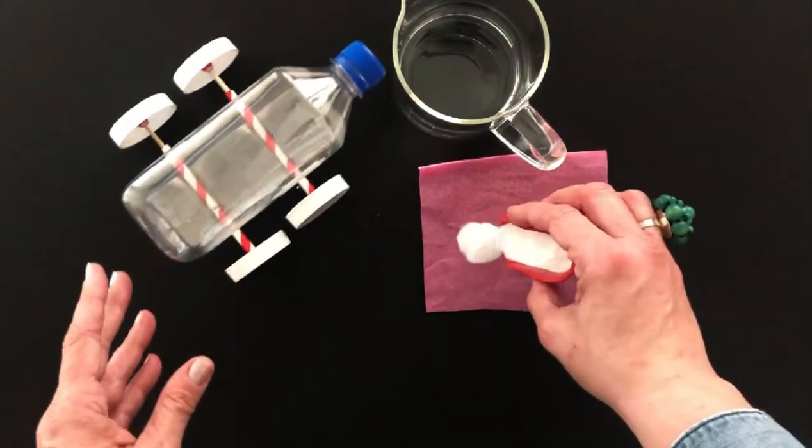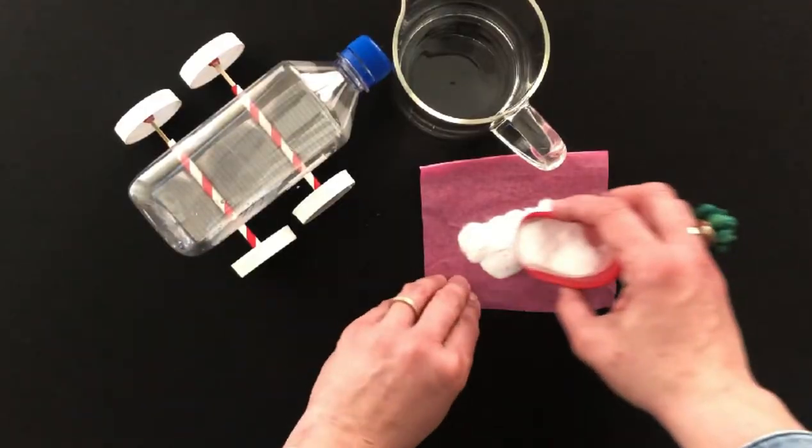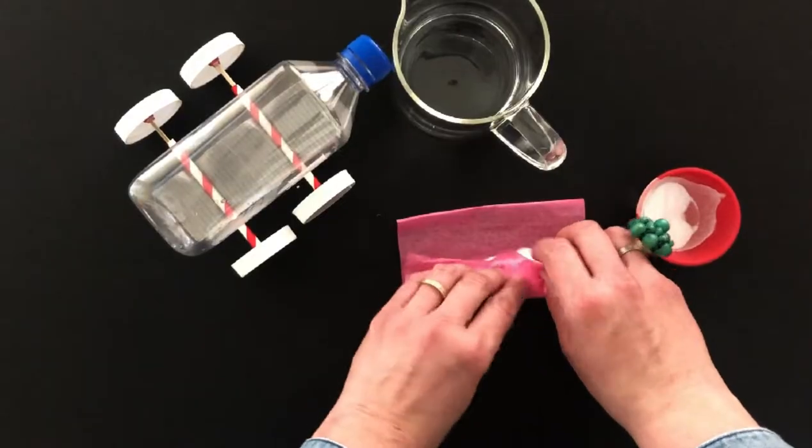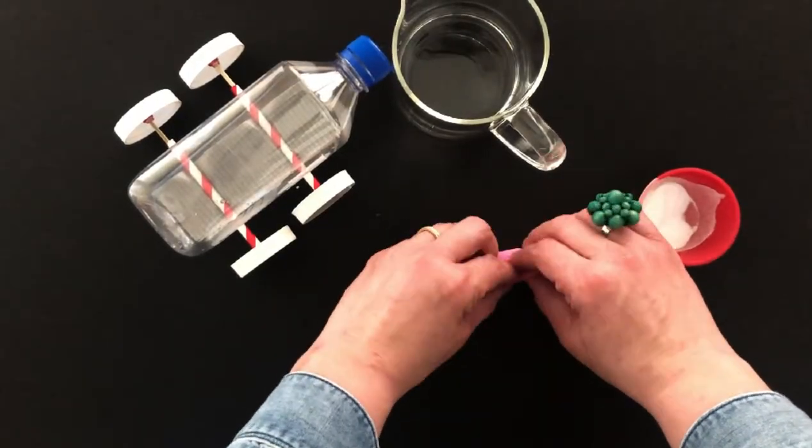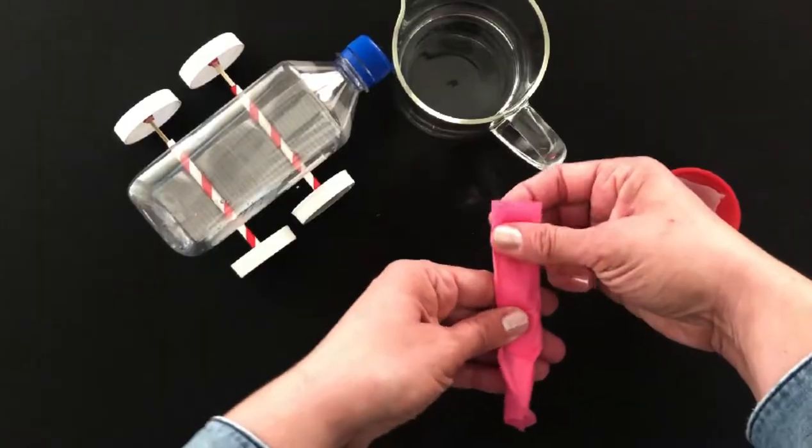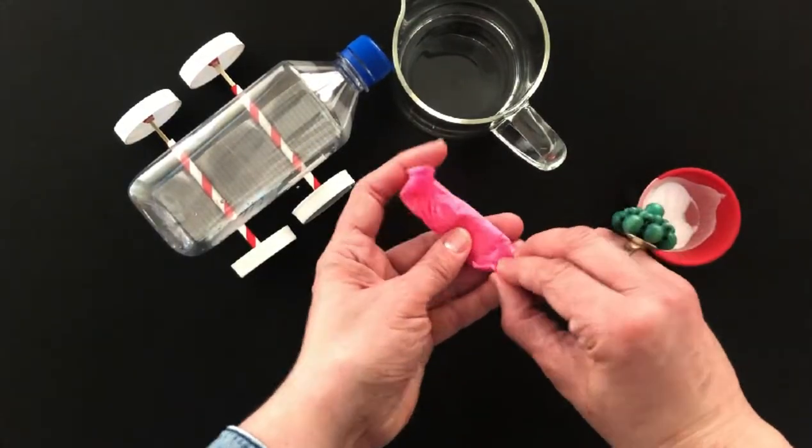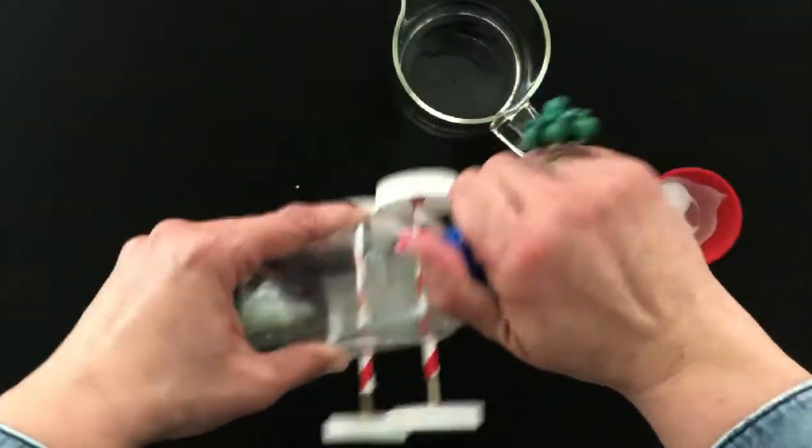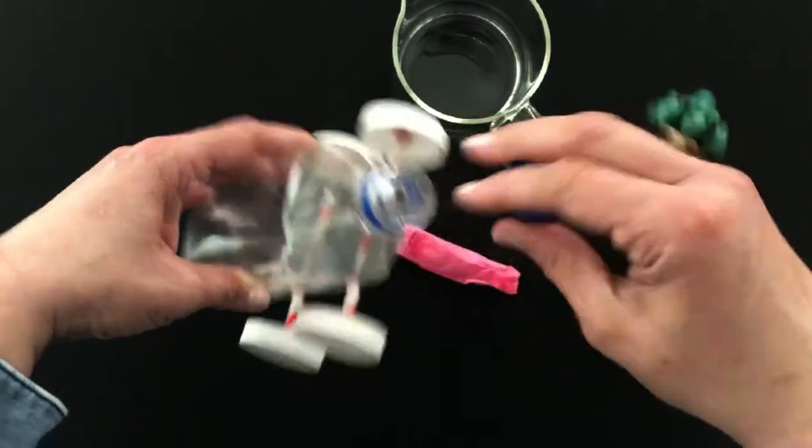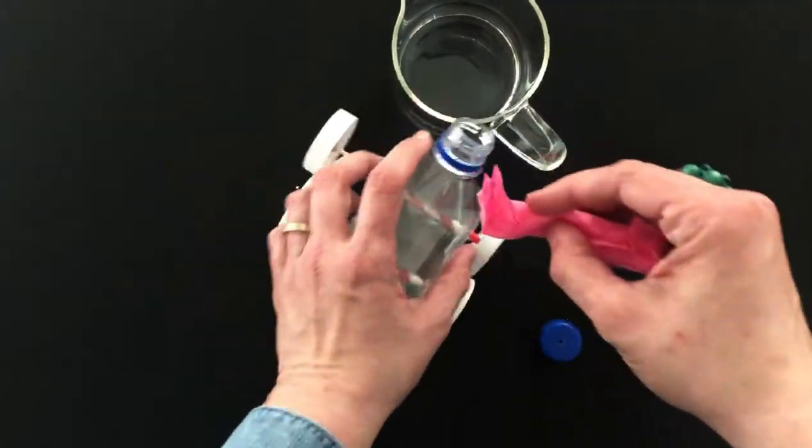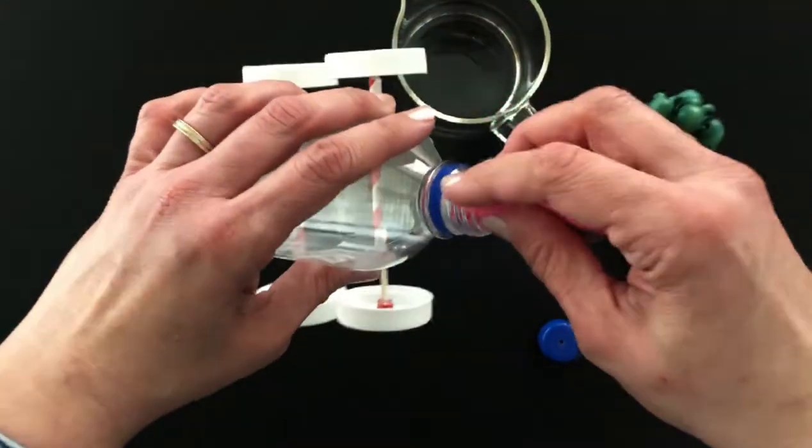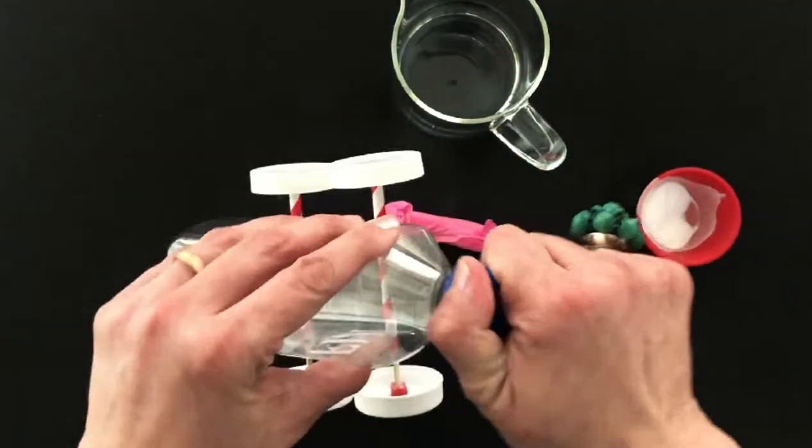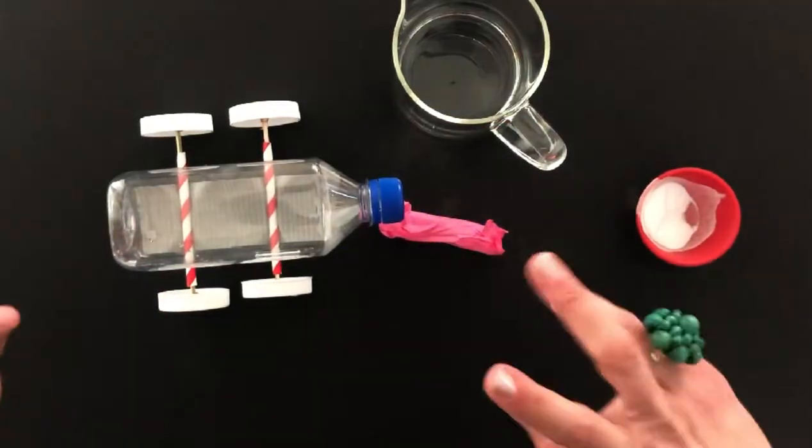And then you're going to add some baking soda to a little piece of tissue paper and you're going to create a little rolled up present and you're going to fold these two sides in like this. And when you're outside you're going to open up your bottle like this, your vinegar is already inside, and you're going to shove this in really quickly, oh my gosh super fast, and then you're going to close it.